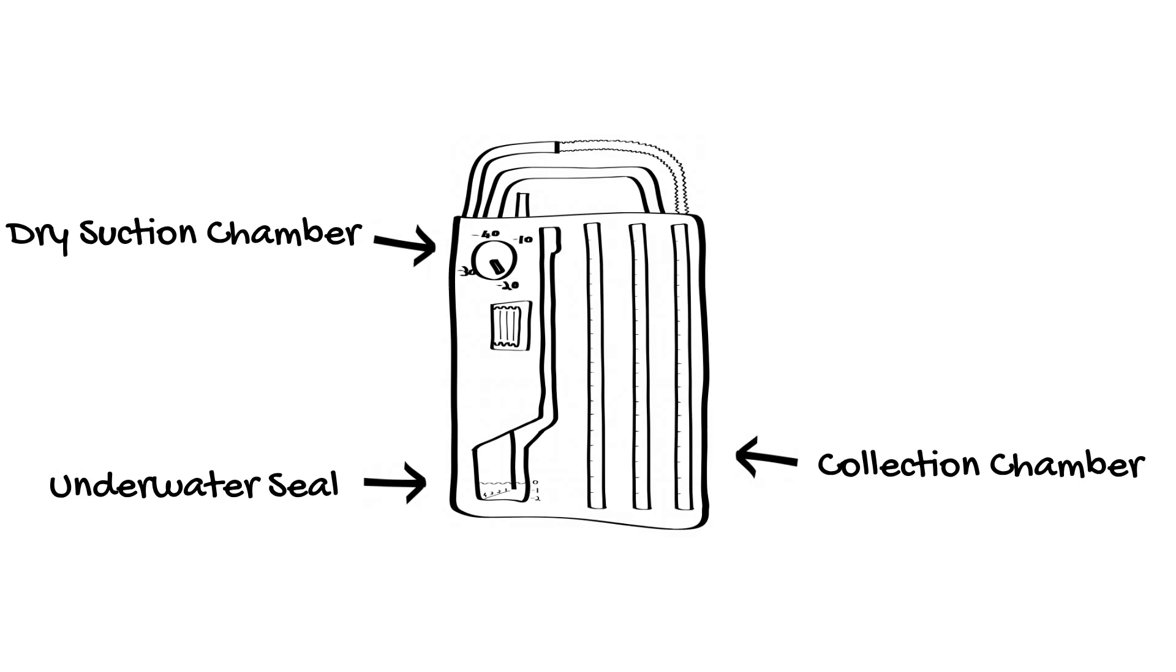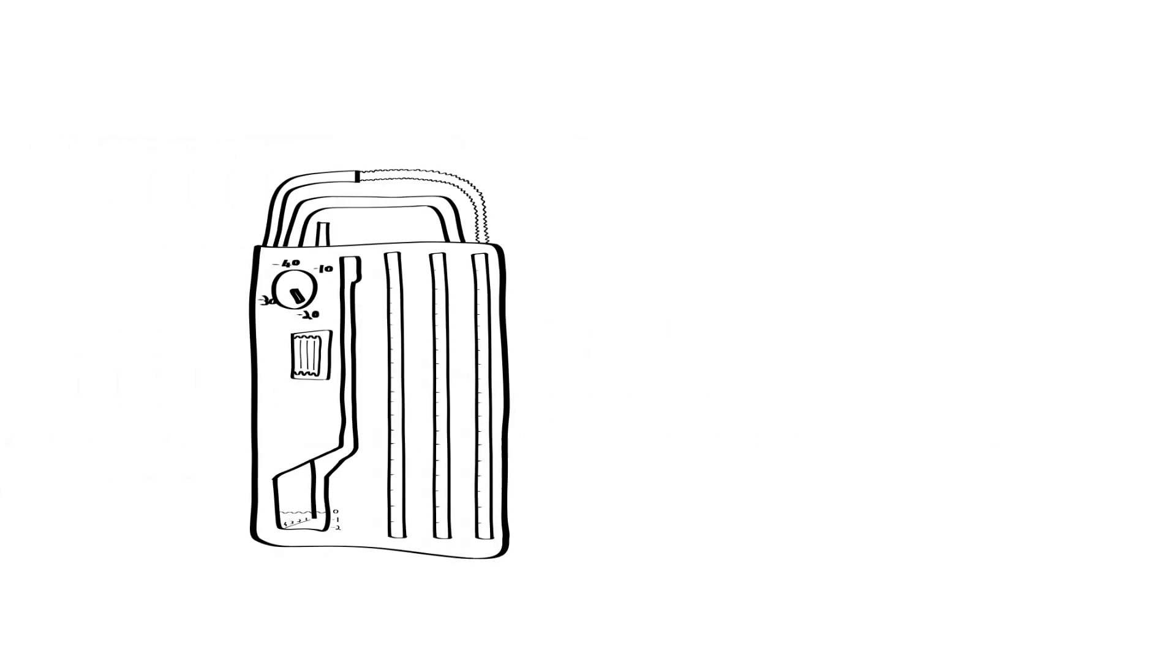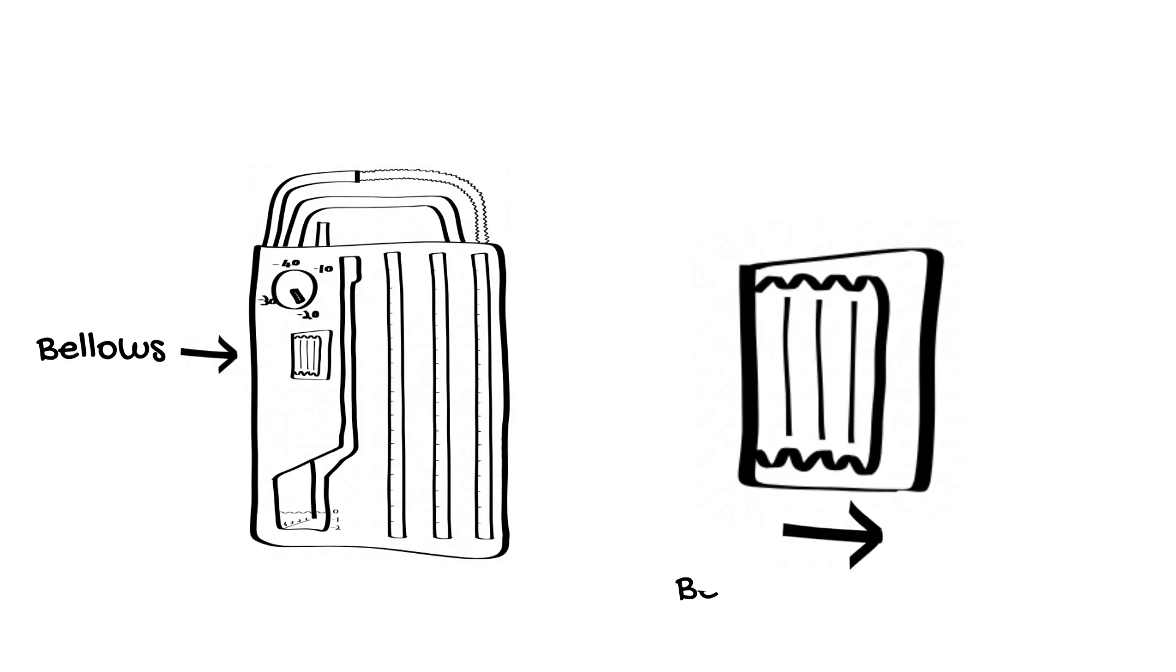Modern three-chamber drainage systems have replaced the third underwater suction chamber with a dry suction chamber and bellows. The suction pressure comes set at minus 20 centimeters of water and can be changed from minus 10 to minus 40 centimeters of water. Movement of the bellows with negative pressure confirms that the suction system is working.